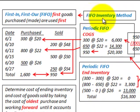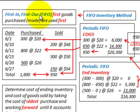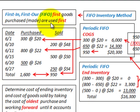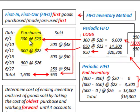Here we're going to be looking at the FIFO inventory method. FIFO stands for first in, first out — that's where the first goods purchased or made are the first used. We're going to go through some numbers showing how we would use this method based on some inventory that we have and some sales that we make.